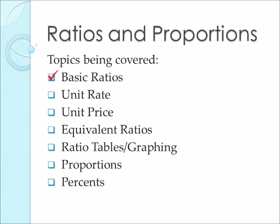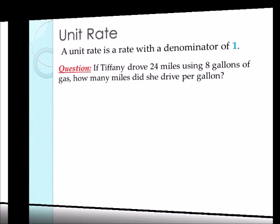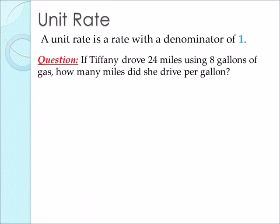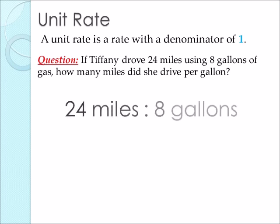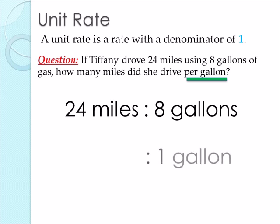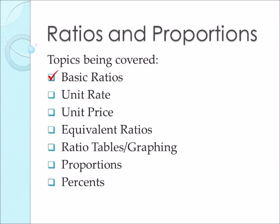This pretty much covers basic ratios. The next topic we will be talking about is unit rate. A unit rate is a rate with a denominator of 1. In unit rate, the unit means the number 1. So in the first question, if Tiffany drove 24 miles using 8 gallons of gas, how many miles did she drive per gallon? We're comparing miles to gallons. We know there are 24 miles to 8 gallons, but we want to find the unit rate — how many miles per 1 gallon. We need to divide both numbers by 8. We're dividing 24 by 8 to find 3 miles per 1 gallon. In unit rate, really what you're doing is just dividing.